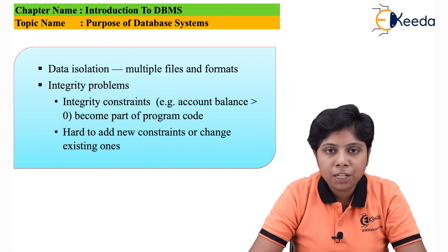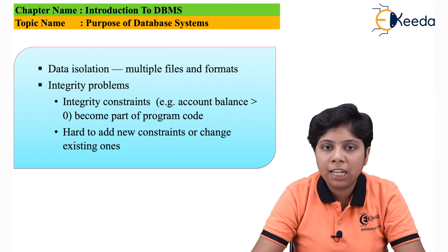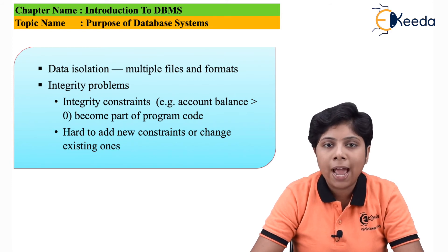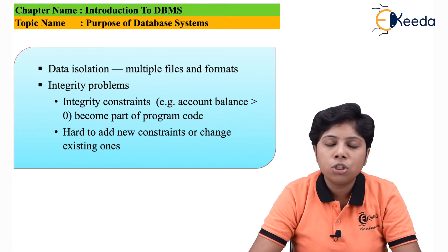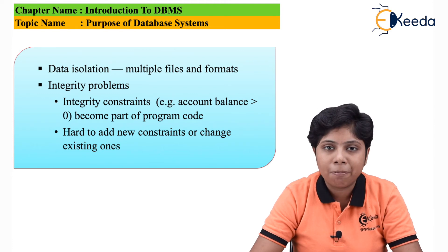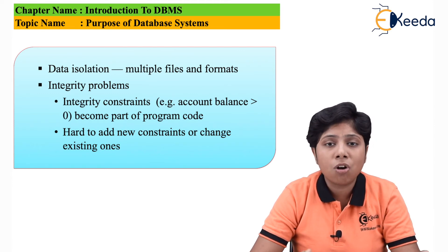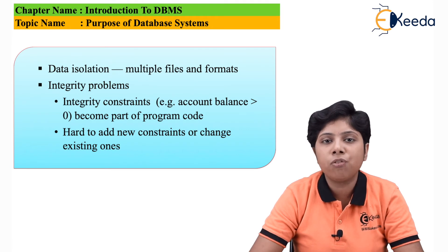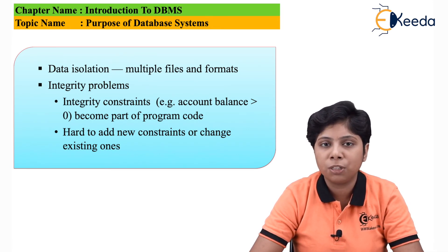For example, university records can contain student name, phone number, address, and roll number — all of different data types. If consistency constraints apply to each of these different data types, it will cause an integrity problem or consistency problem on those particular files.